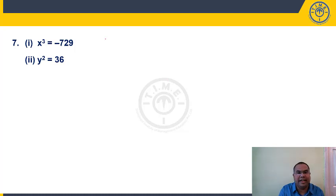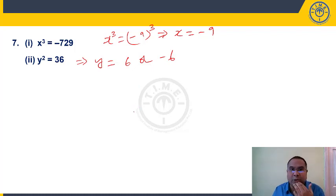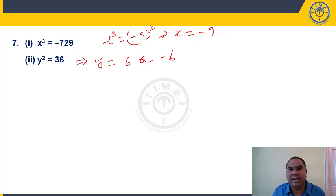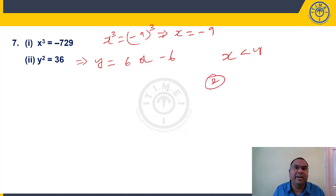Question 7: x³ = 729, so x = −9 (since −9³ = −729... actually 9³ = 729, so x = 9... re-reading: x³ = 729 implies x = 9). y² = 36 implies y = ±6. Comparing: if x = −9 (as stated), then −9 < 6 and −9 < −6. x < y. Answer: choice 2.